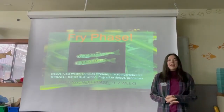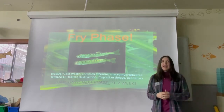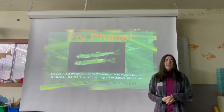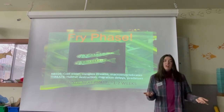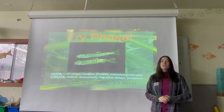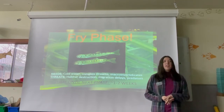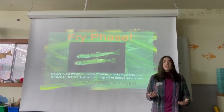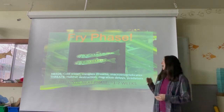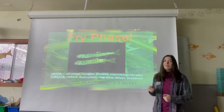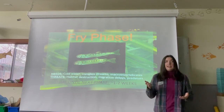Let's move on to the fry phase. Our fry look like these little guys in the picture — only a couple inches long. They have a lot of needs within their habitat to survive. One of those is cold temperatures; the streams need to be between 40 and 55 degrees Fahrenheit for them to stay healthy. They also need complex streams with lots of woody debris to hide in, and macroinvertebrates to eat. Macroinvertebrates are species without a backbone that you can see with your naked eye, without a microscope.